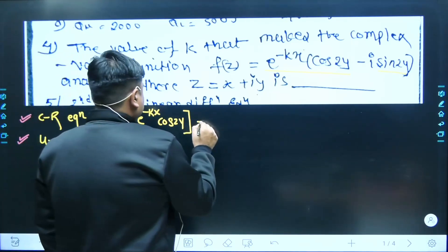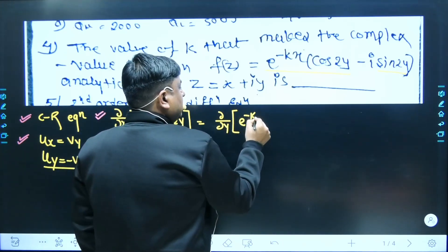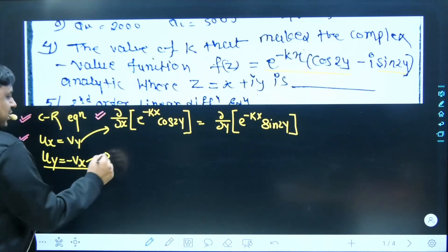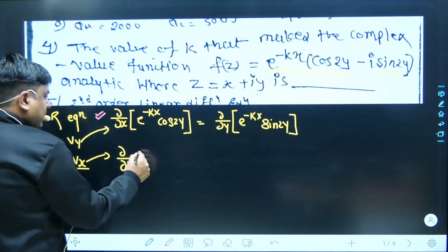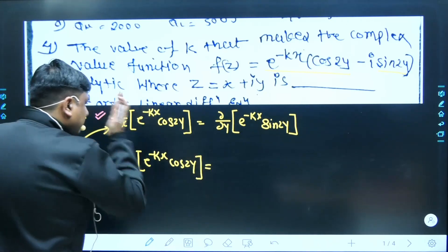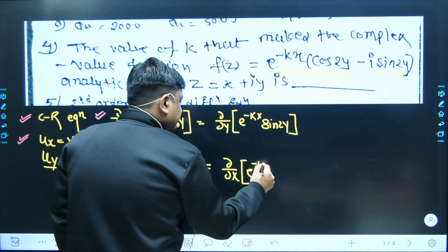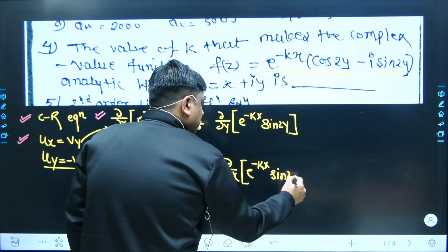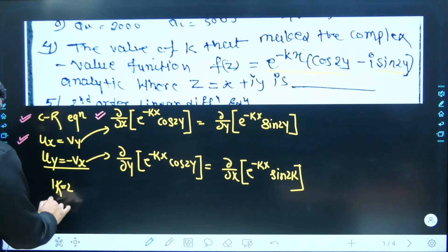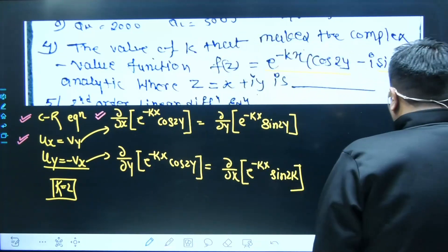Similarly, on the right-hand side, I am going to take the partial differentiation of the imaginary part, which is e^(−kx)·sin(2y). We also have to satisfy the second CR requirement: the partial derivative with respect to y of e^(−kx)·cos(2y), and the same goes for the other equation. While satisfying both requirements, you ensure both equations are satisfied, and that is only possible when the value of k equals 2.